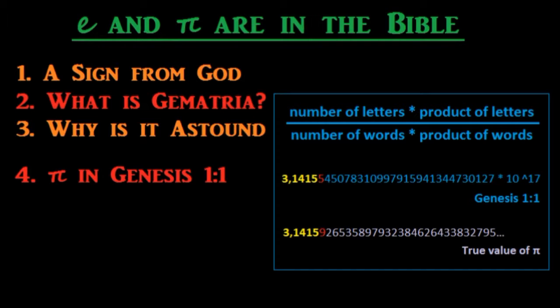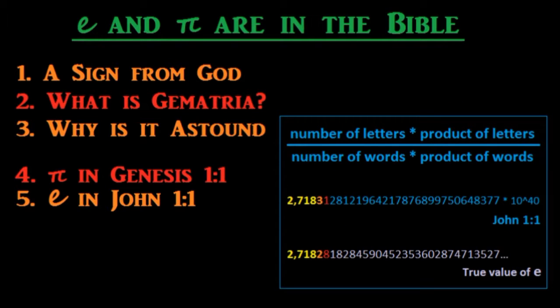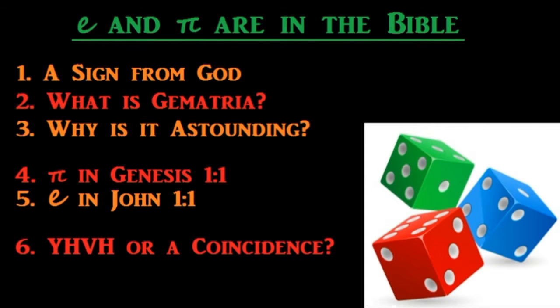In the fourth episode, we'll see how π is in Genesis 1:1. In the fifth episode, we'll see how e is in John 1:1. In the sixth episode, we'll discuss if this could be a coincidence or if there is another explanation. We'll answer to all the objections that modern people, clinging to their vision of the world, will do to deny that e and π are in the Bible.